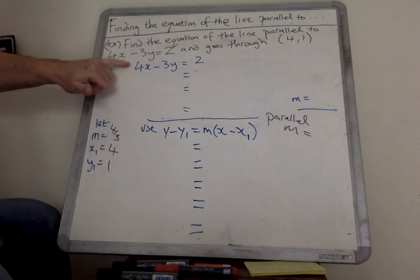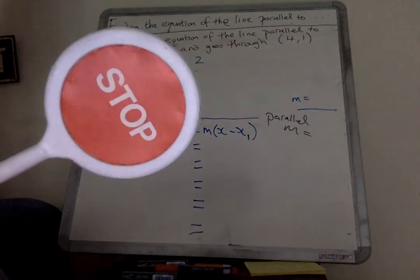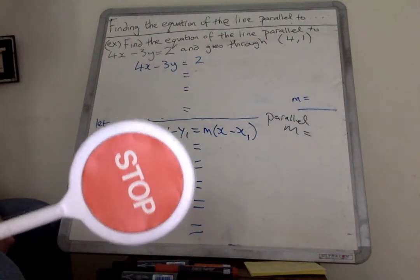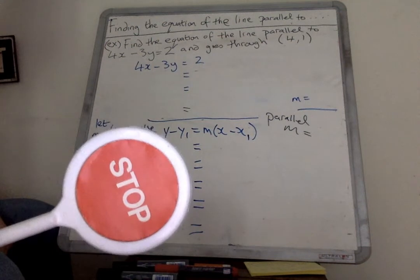First of all, if we're going to find something that is parallel to something else, I need to find out what the m value of this is. So stop the video and see if you can work out what the m value is before you watch the rest of the video.